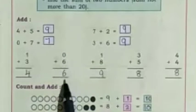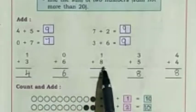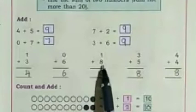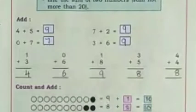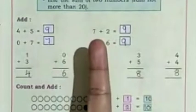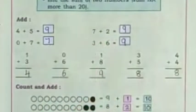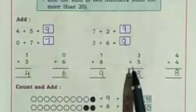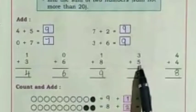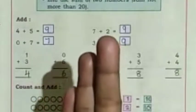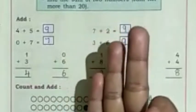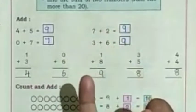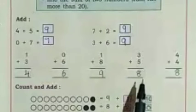If we add any number with 0, the answer is the number itself. 1 plus 8. Which is the big number? 8. 8 in the mind, 1 on the finger. After 8: 9. 3 plus 5. Which is the big number? 5. 5 in the mind, 3 on the fingers. After 5: 6, 7, 8. 8 is the answer.